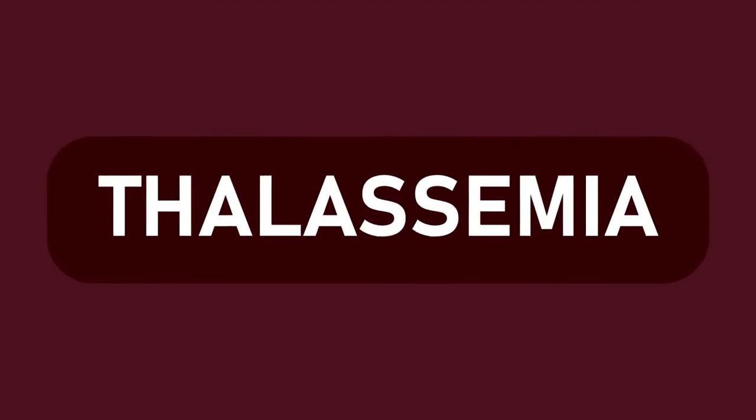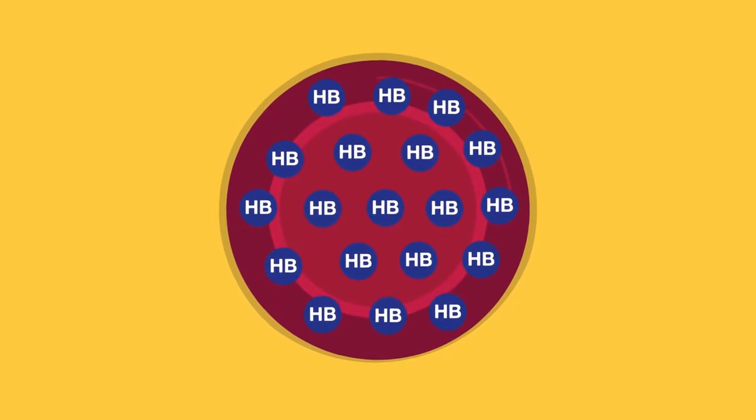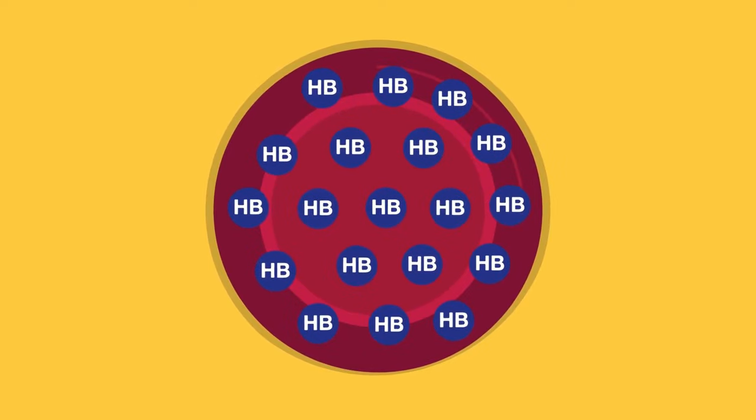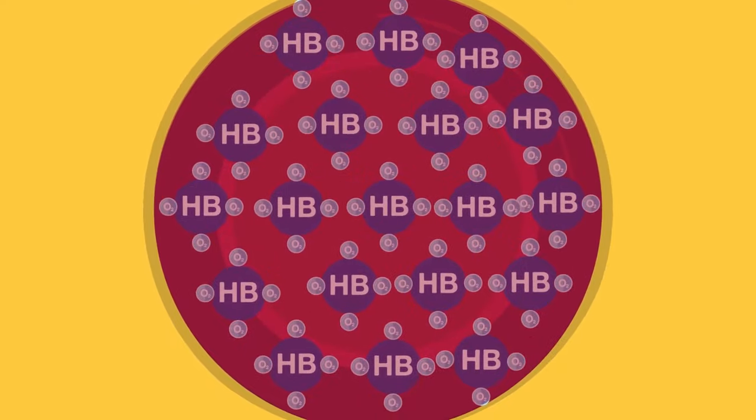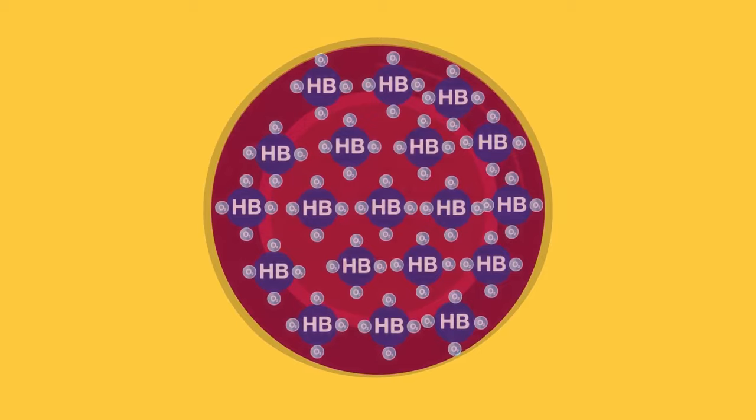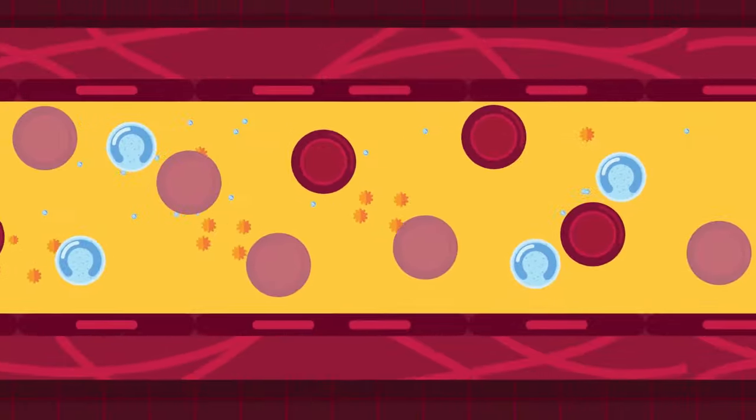Thalassemia is a group of inherited blood disorders. These disorders are caused by genetic mutations that prevent the normal production of hemoglobin. Hemoglobin is the carrier molecule which carries the oxygen obtained during the process of respiration. When red blood cells do not have enough hemoglobin, oxygen doesn't get to all parts of the body. Organs then do not function properly.